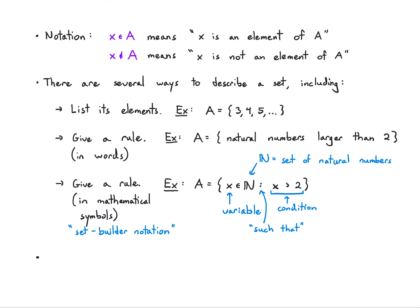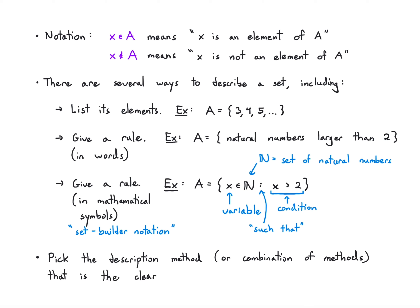Which description method should I use? I should use the method or combination of methods that is the clearest for the example I'm dealing with. In some cases where I want to do a lot of mathematical manipulations, I might use set builder notation. In some cases where I want to describe a word problem, I might give the rule in words. In some cases, it's just easier to list a few elements so we can see them.